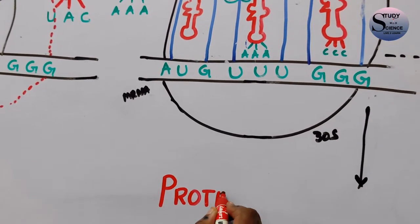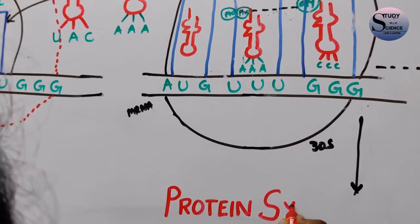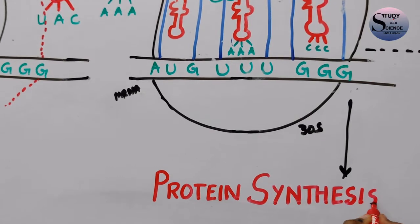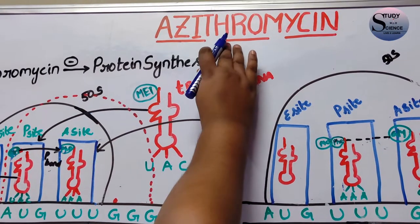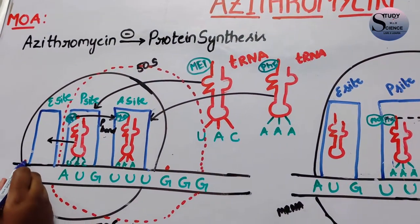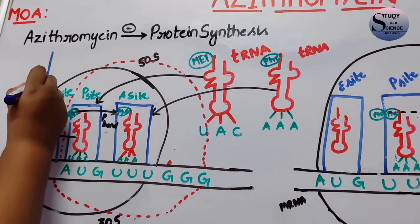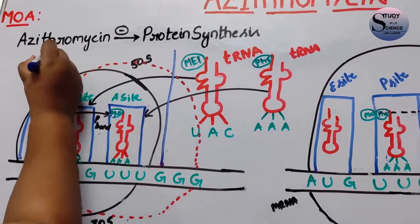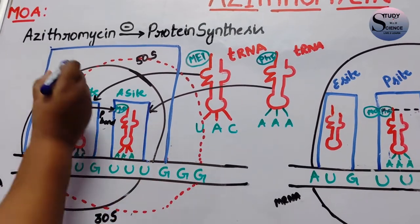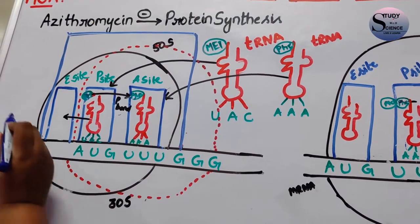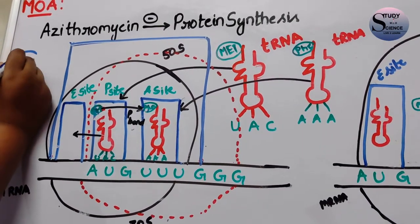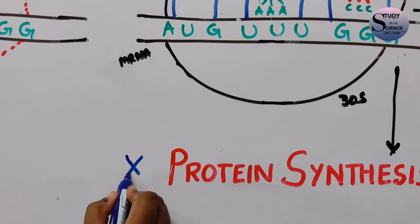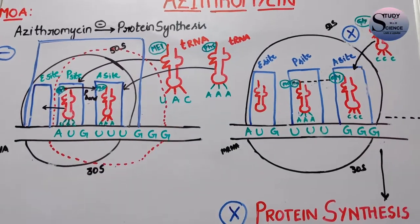I hope this protein synthesis process is clear. Now let us see what Azithromycin does in this protein synthesis process. Azithromycin binds to the 50S ribosome of the mRNA — the blue line being drawn represents the Azithromycin drug. Whenever it binds to the 50S ribosome, the movement of the ribosome one triplet forward doesn't happen, and the addition of new tRNA doesn't occur, thereby inhibiting the protein synthesis process.